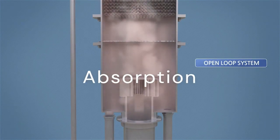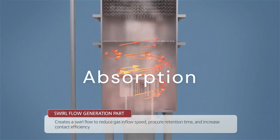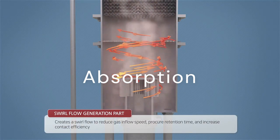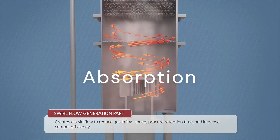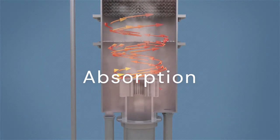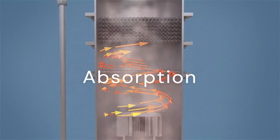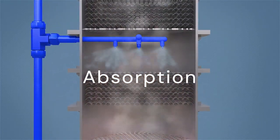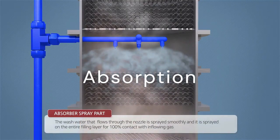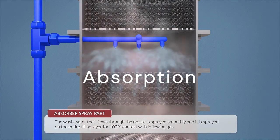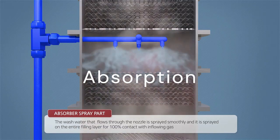Gas absorption, commonly referred to as scrubbing, is a process that involves coming into contact with a liquid and a gas mixture in order to dissolve one or more of the gas mixture's components preferentially and create a solution of those components in the liquid. As a result, a gas component is being mass-transferred from the gas phase to the liquid phase. The liquid is considered to have absorbed the solute that was thus transported.